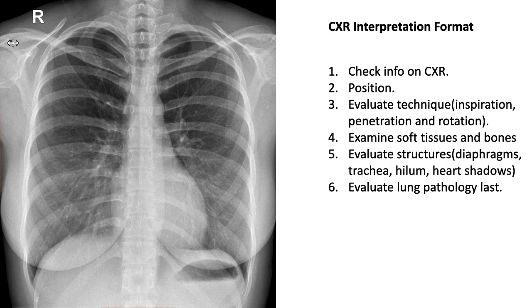Then you have to start to read the X-rays from outside to inside. Remember to examine soft tissues and bones first, then extrapulmonary structures, and then you go to the diaphragm, trachea, hila, heart shadow, and mediastinum.